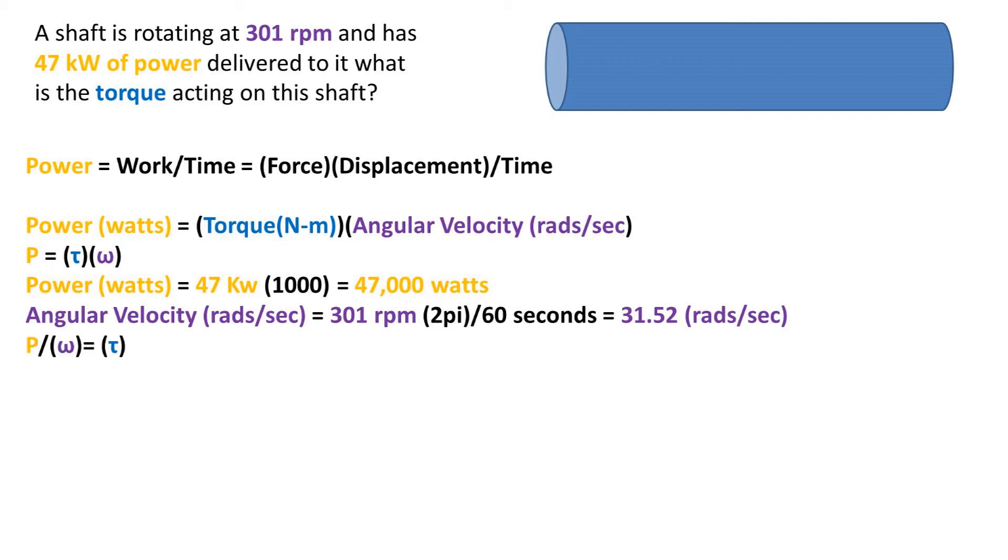Now we must rearrange the formula to get what we are solving for, torque to one side. So it is now, power divided by angular velocity equals torque. Plugging in our numbers, we get a torque of 1491 newton meters.